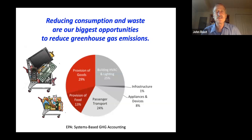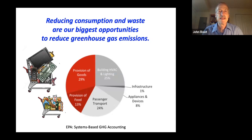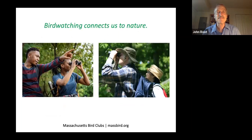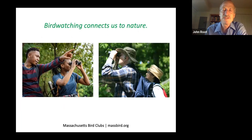One thing we can do to help birds, wildlife, and ourselves is to simply buy less or be aware of which things we buy have the highest carbon footprint. 42% of our carbon footprint is either a purchase of non-food or food items, with the others being passenger transport, building heating and cooling and lighting, and appliances and devices. Birdwatching connects us to nature and helps us to have a lifestyle that is less materialistically oriented and more oriented to nature. Visit massbird.org and you'll find a Massachusetts bird club near where you live.